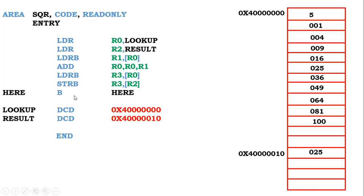Then we stop by creating an infinite loop. Once this instruction executes, control stays here and keeps executing the same instruction infinitely — it won't execute any further instructions. For example, if the input is 6, then base address plus 6 points to that location, retrieves the value, and places it in the result location. This is the way of finding the square using lookup table technique. We can also use this to convert a digit to seven-segment code, ASCII code, or any other form.